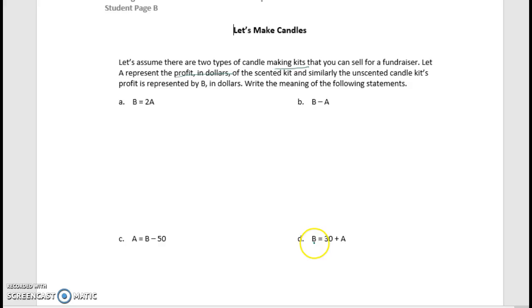So let's look at letter D here. And so we're talking about what is B, and so like in the last one, when we're talking about Sarah and Corey, we could say Sarah was something in relationship. So let's do B, since B is equal to, we can say the profit in dollars of the kit that's being, how about we say the unscented candle kit. So the profit in dollars of the unscented candle kit.